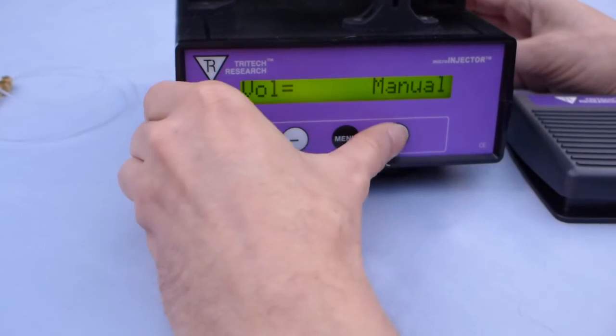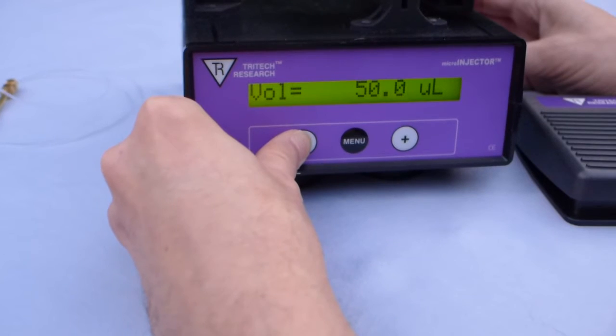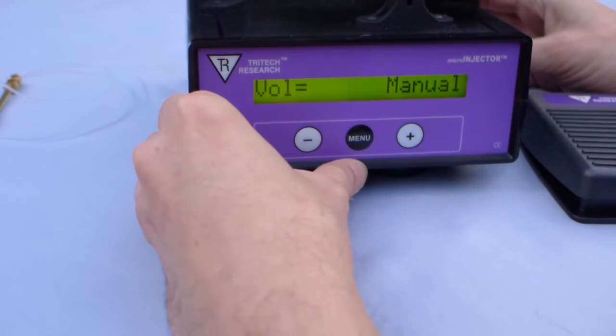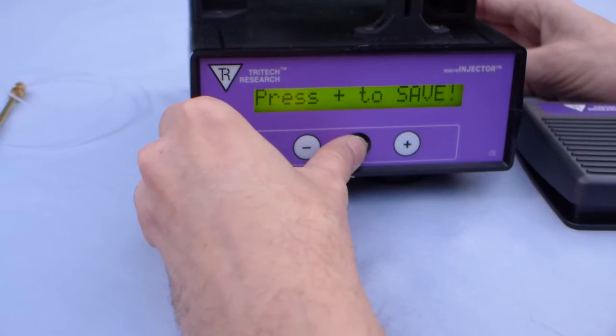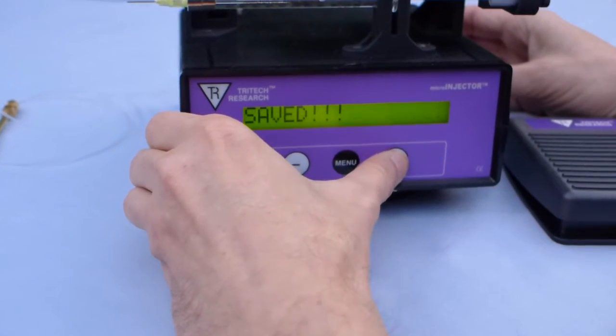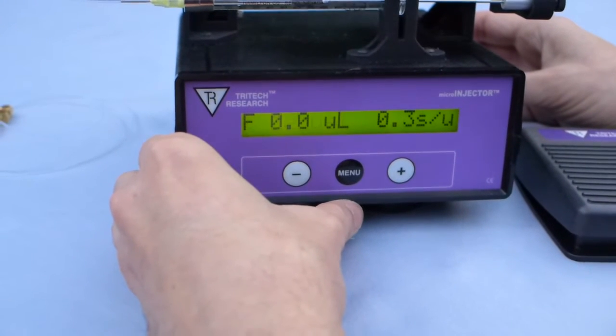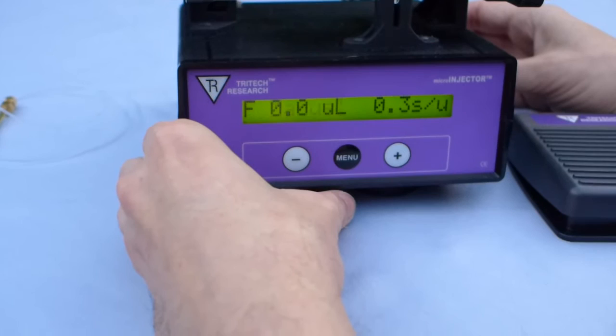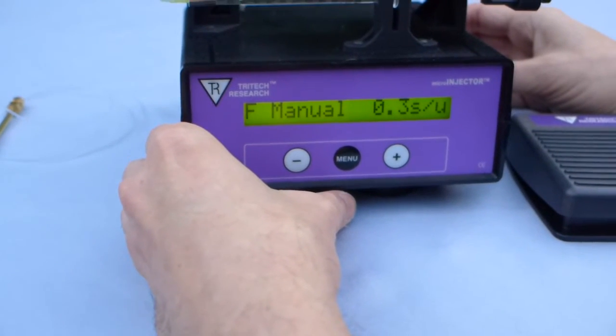And then when you've got the setting that you would like it to be at, what you do is you push the menu button again, and then it says press plus to save. And if you press plus, it saves it, and now that parameter is stored in the system, and it will remember that when power goes off and power comes on.